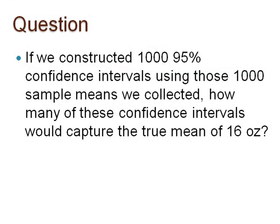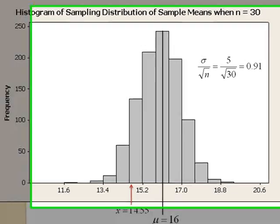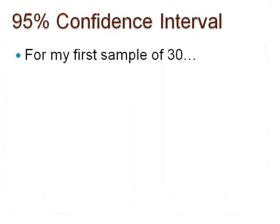What if we constructed 1,000 95% confidence intervals using those 1,000 sample means we collected? How many of those confidence intervals would capture the true mean of 16 ounces? Pause here to think about this. To begin answering that question, let's refer to the first sample of 30 weights. Our sample mean from this sample is 14.55. Pause to construct a 95% confidence interval using the sample mean of 14.55.